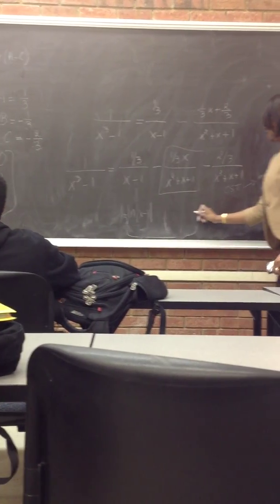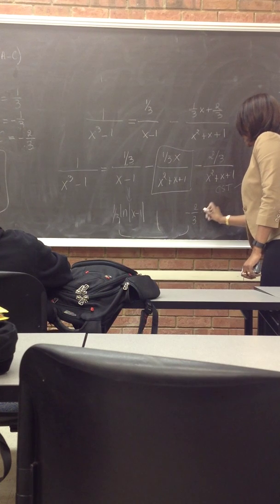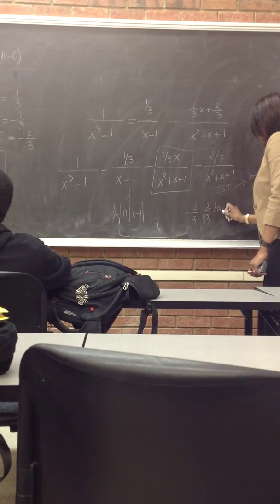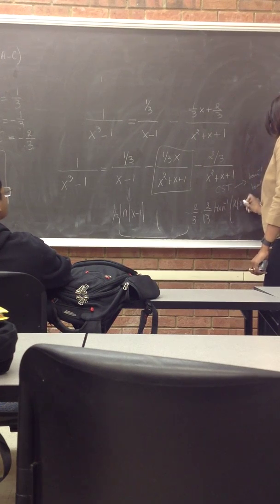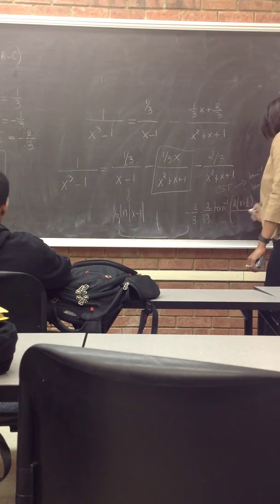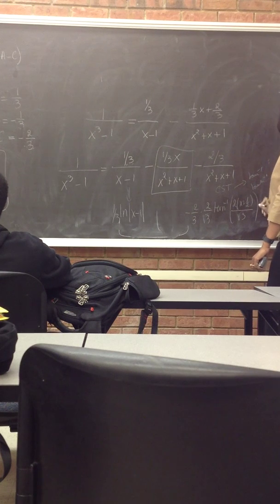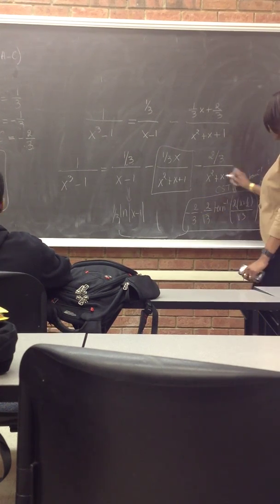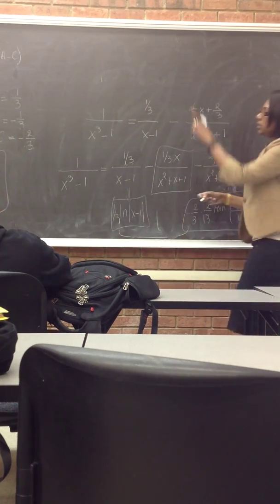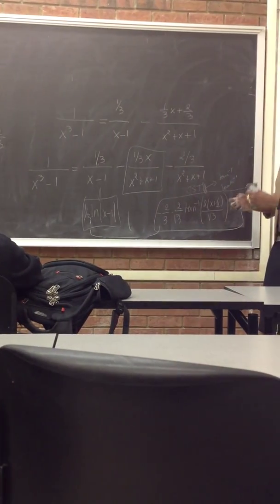And the third one would be negative 2 thirds, times 2 over square root of 3, tangent inverse of 2 times x plus 1 half over square root of 3. This one is this one, this one is that one, and the second one is that one. And then you put them all together.